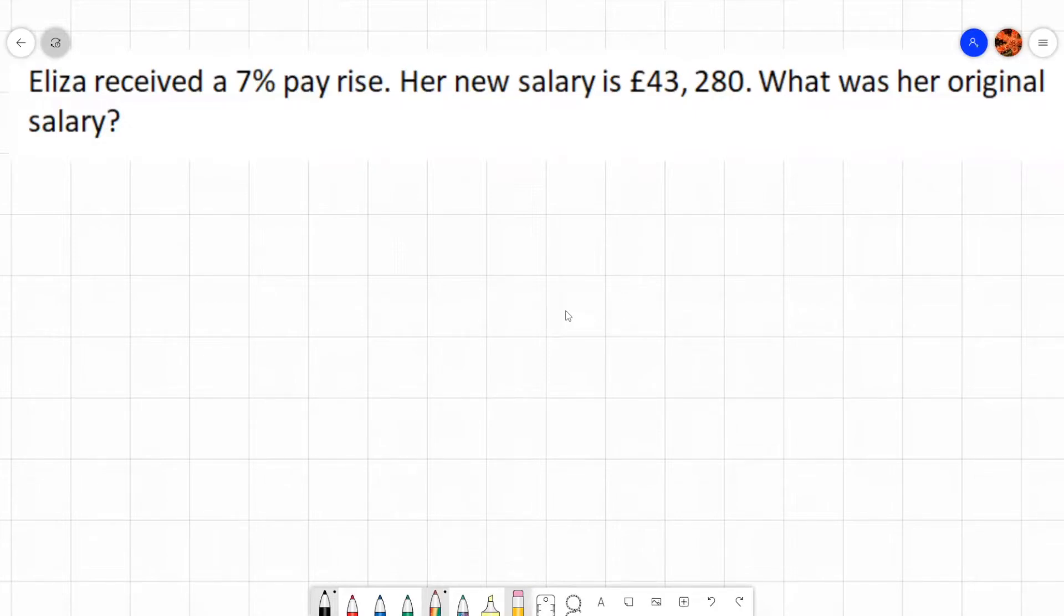we're going to get to whatever she has now. So we're going to say £43,280 is worth 107%. We want to work at the original, which is 100%. So we're going to work at 1% first. Well,